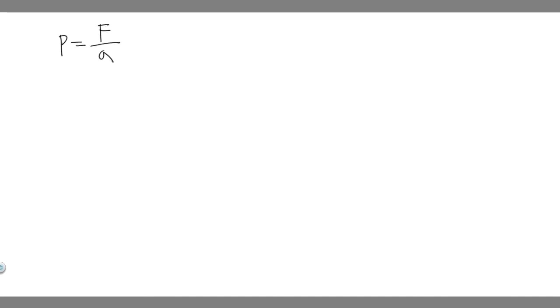In this problem, we're told to estimate the pressure exerted on a floor by A, one pointed chair leg — 66 kg on all four legs of area 0.02 cm² — and B, a 1,300 kg elephant standing on one foot with an area of 800 cm². In order to solve this problem, the general formula you should know is that pressure is equal to force over area. So we can solve for the force and divide by the total area to get the pressure.